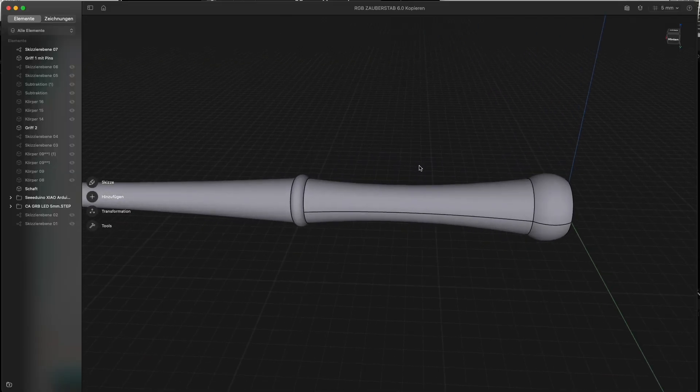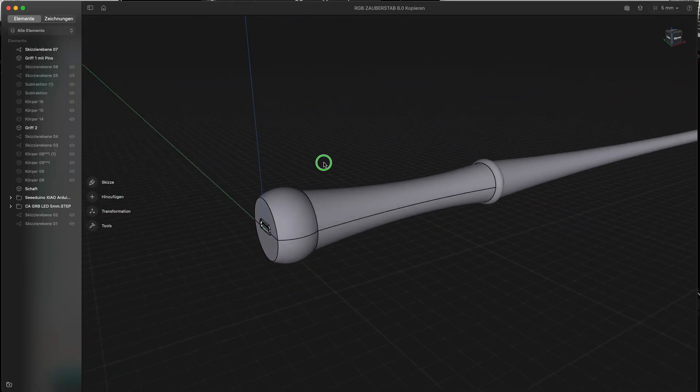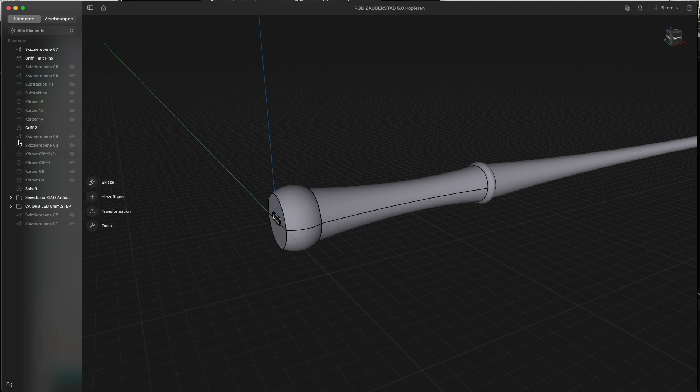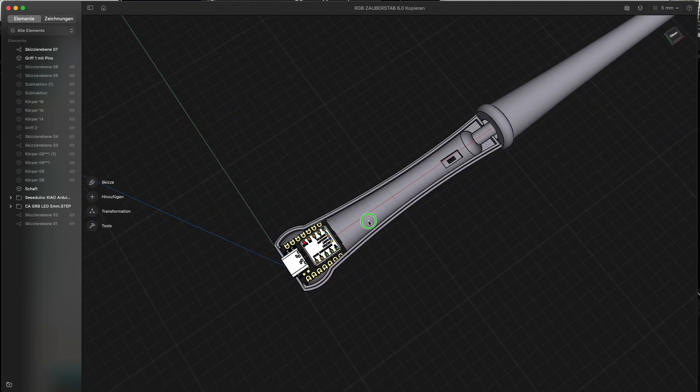And now I was able to design a really thin wand which only contained a microcontroller, a LiPo battery, some wires, and an LED.